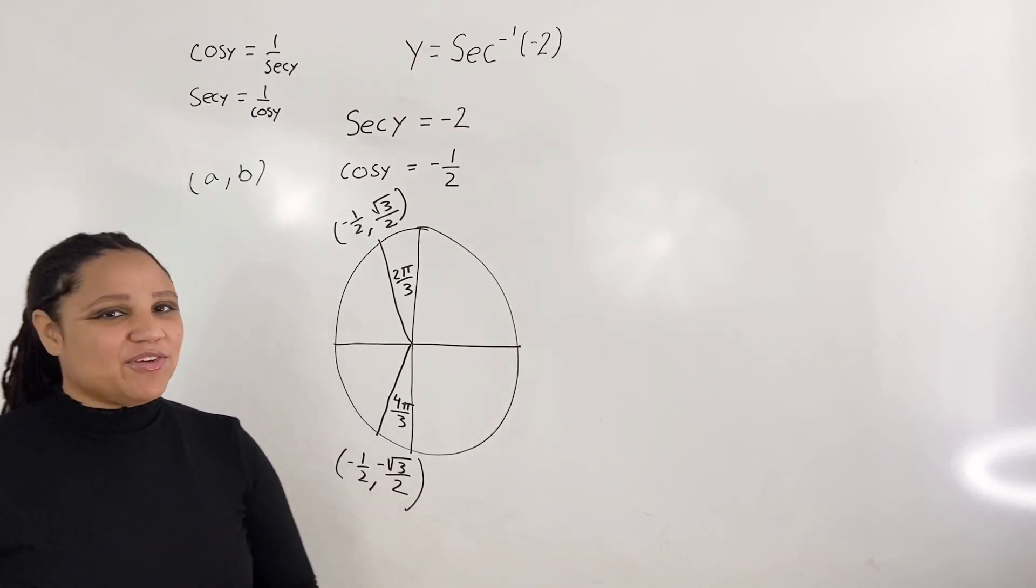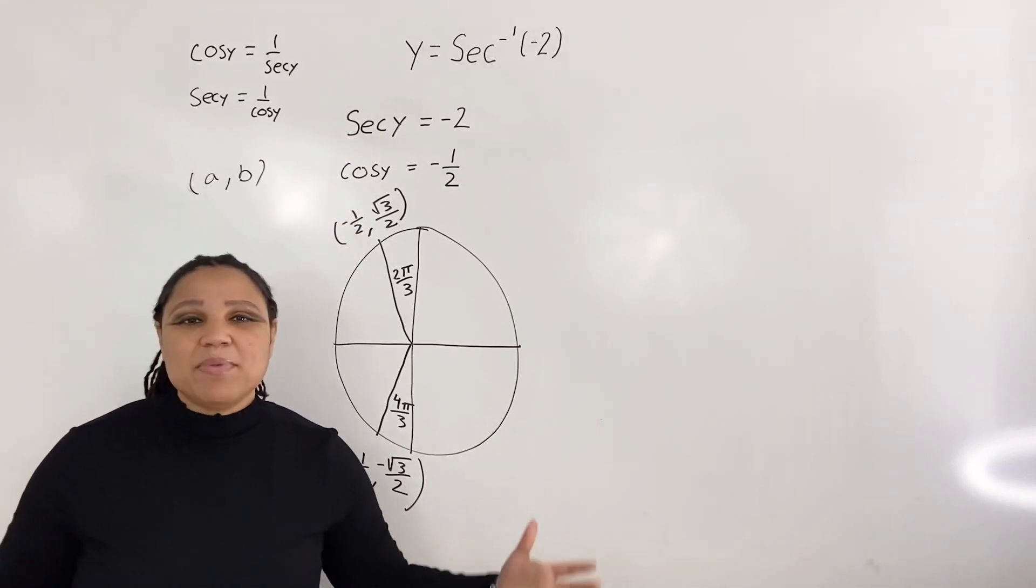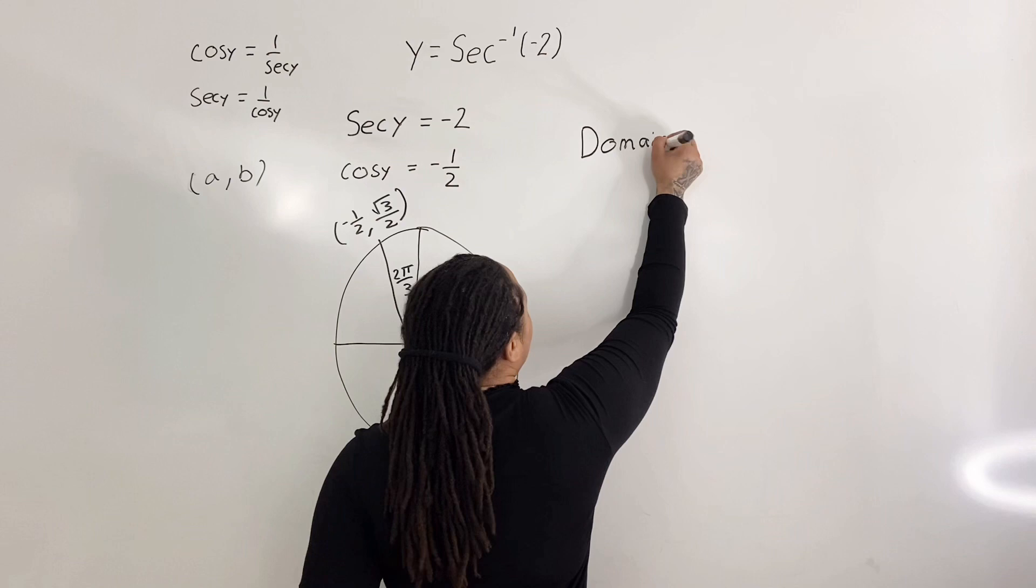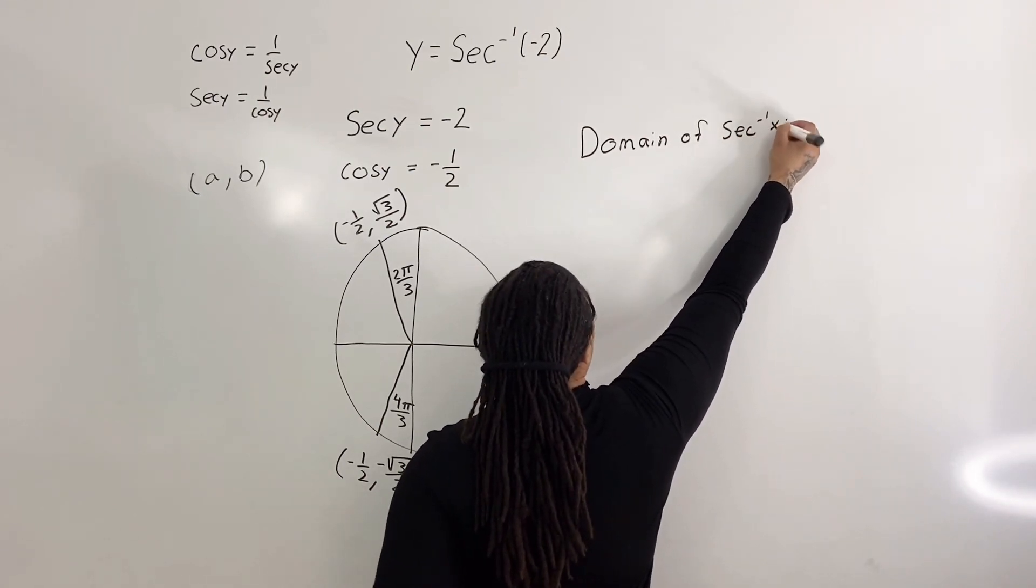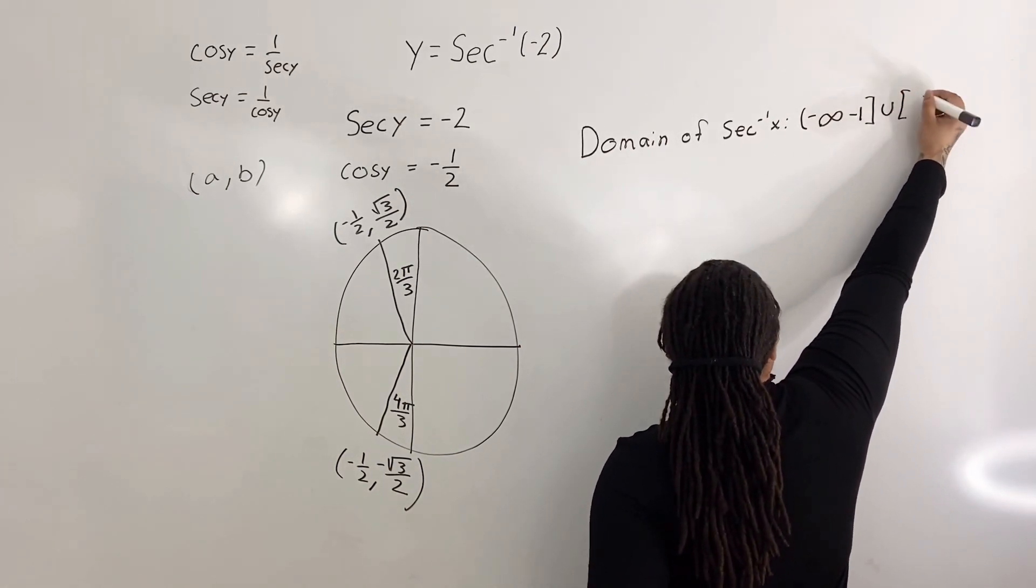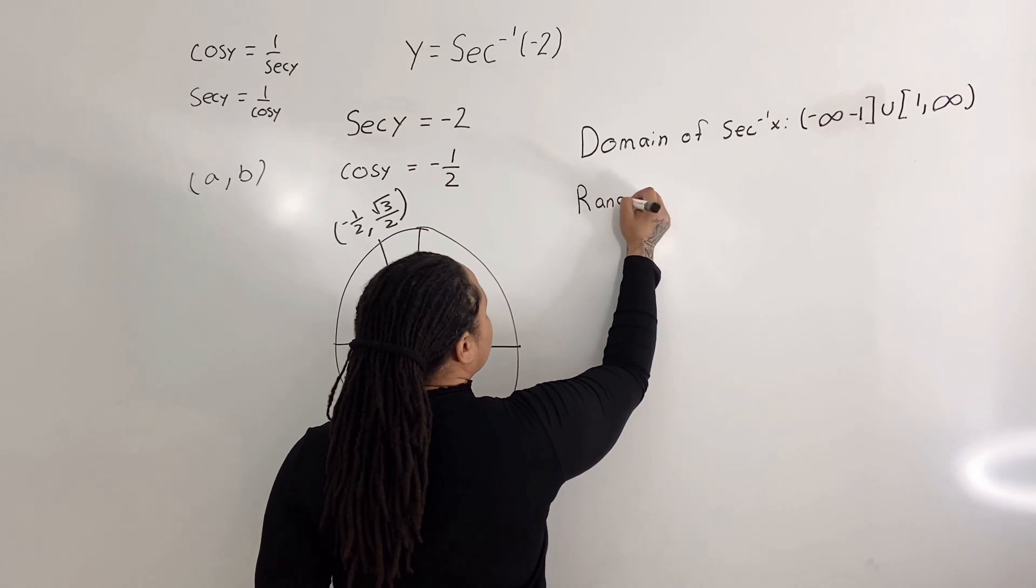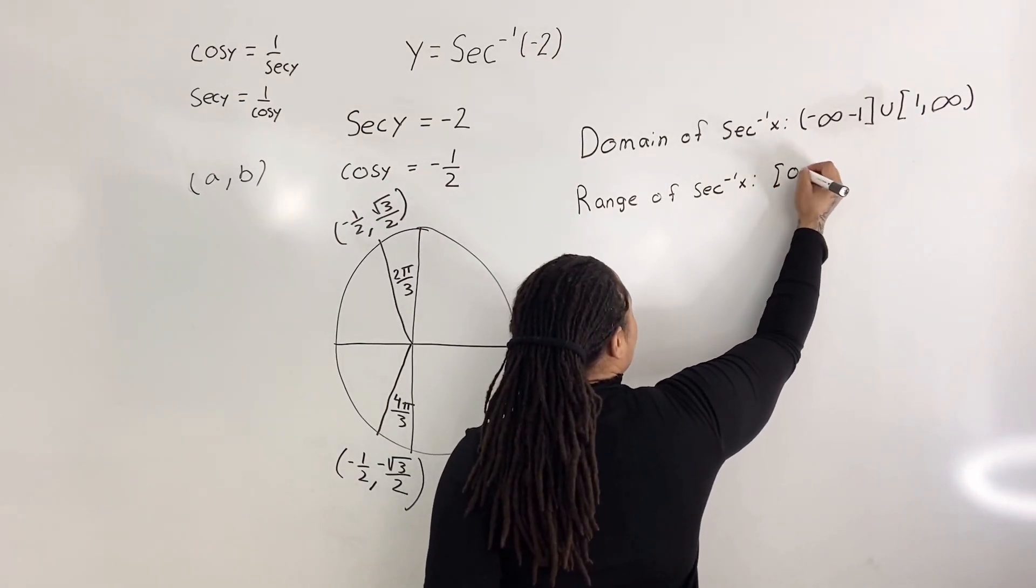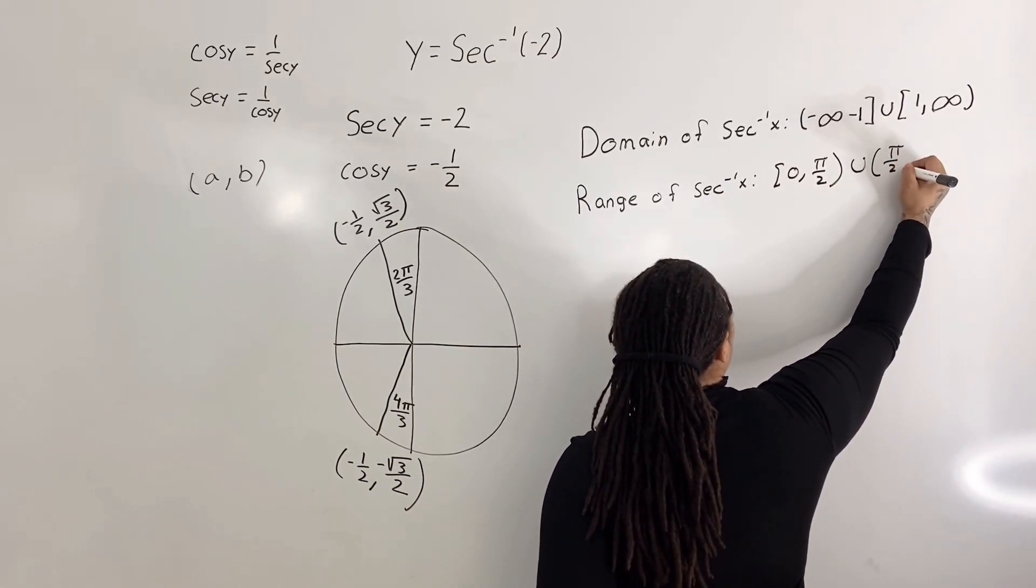Now we can't just choose any value for y. We must consider the range of inverse secant x. But how about we first look at the domain. So the domain of inverse secant x is from negative infinity to negative 1, union from 1 to infinity. And the range of inverse secant x is from 0 to π over 2, union from π over 2 to π.